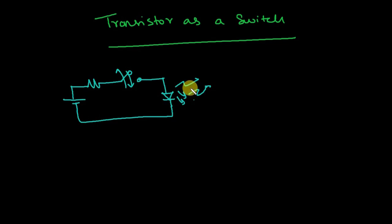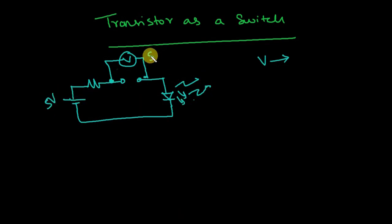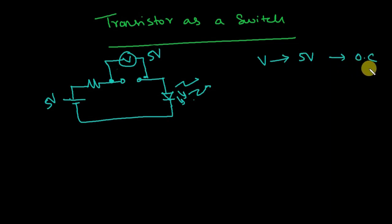Now let's look at the key points we can translate into transistor behavior. If I put a voltmeter across the switch and the switch is in open condition, the voltage across the two terminals is the applied voltage — here that's 5 volts. The full voltage drops across the open circuit. Whenever the voltage is 5 volts, the switch is open.